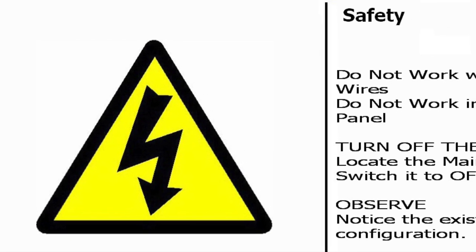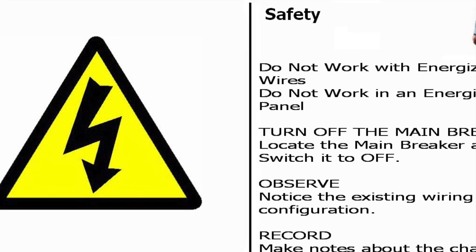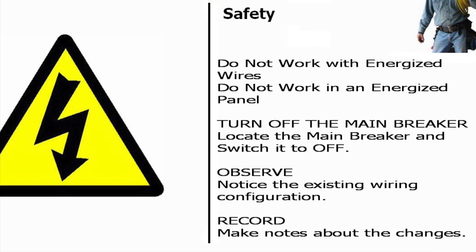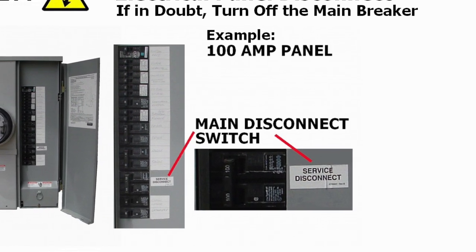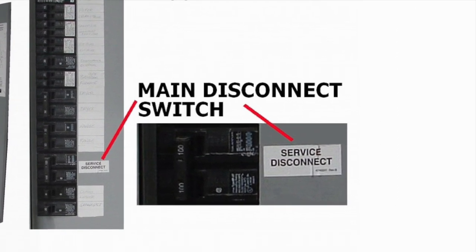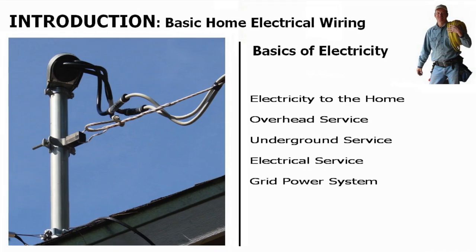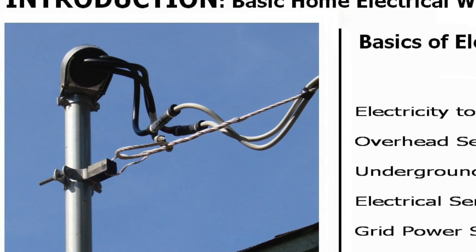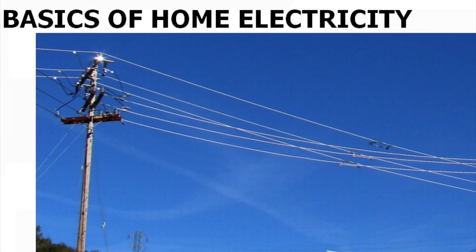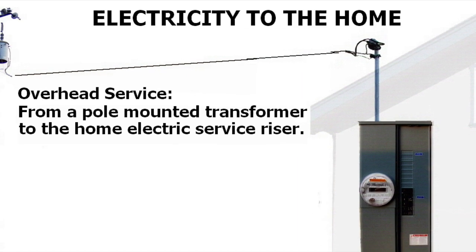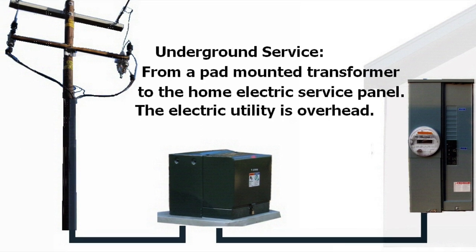First of all, we really get into safety. I stress how homeowners especially should not be working with live electricity — nobody should. We show you where the main disconnect switches and circuit breakers are and how to identify and turn them off. We also give you an introduction to the basics of electricity, covering how it comes to the home through an overhead service, an underground service, from the power grid, and even an off-grid system.